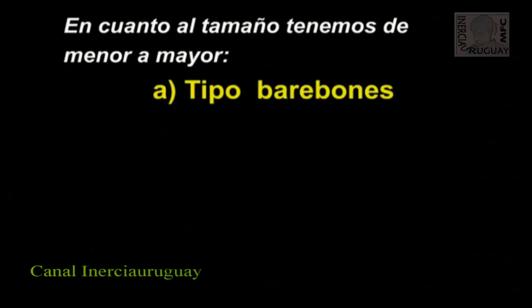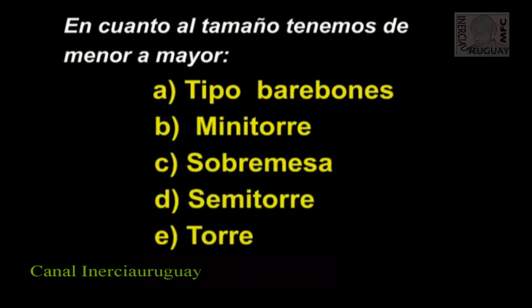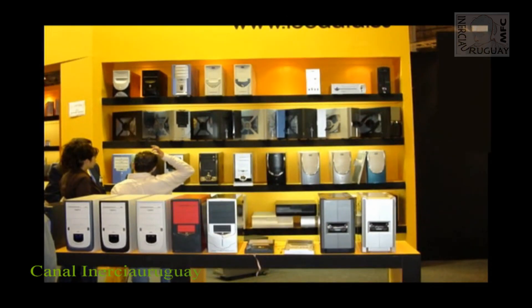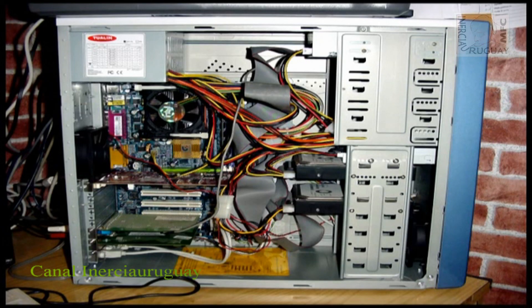En cuanto al tamaño, tenemos de menor a mayor: A. Tipo barebones, B. Minitorre, C. Sobremesa, D. Semitorre, E. Torre y F. Gran Torre. Dentro de cada uno de estos formatos estandarizados existe una inmensa gama de tipos decorativos de cajas que satisfacen todos los gustos y fantasías. Evidentemente, cuanto mayor sea el tamaño de la caja o carcasa, mayor será el número de bahías para ubicar dispositivos tales como discos duros, dispositivos IDE, unidades de CD-ROM, DVD-ROM, etc.